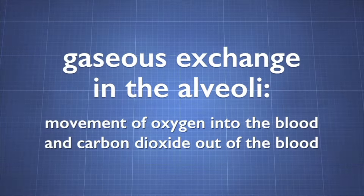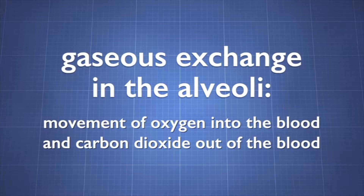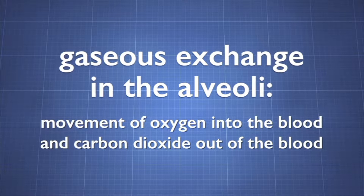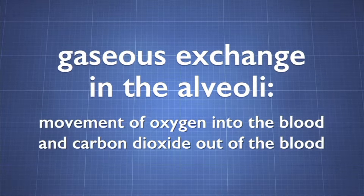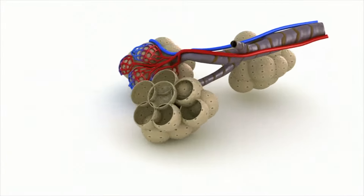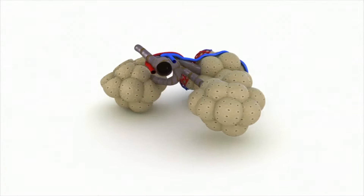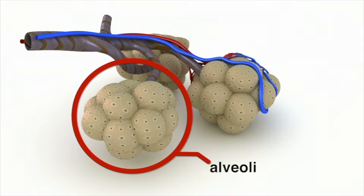Gaseous exchange refers to the movement of oxygen into the blood and carbon dioxide out of the blood. This process takes place at the same time in tiny air sacs called the alveoli. Alveoli are found at the end of small air passages in the lungs called bronchioles.